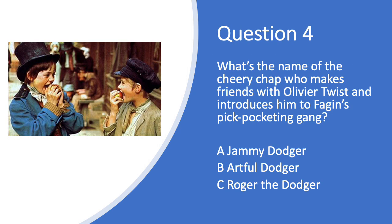We're thinking about Charles Dickens and his book Oliver. What was the name of the cheery chap who makes friends with Oliver Twist and introduces him to Fagin's pickpocketing gang? Is it A. The Jammie Dodger, B. The Artful Dodger, or C. Roger the Dodger? Who do you think it was?